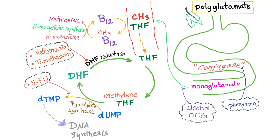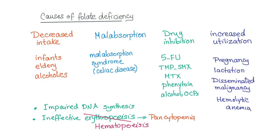Drugs that inhibit dihydrofolate reductase are methotrexate and trimethoprim. Please memorize this. Now for the causes of folate deficiency: decreased intake such as in infants, elderly, malnutrition, alcoholics, and goat milk. Malabsorption such as celiac disease. Drug inhibition by 5-fluorouracil, TMP-SMX, methotrexate, phenytoin, alcohol, and oral contraceptive pills. All of these drugs were in the previous slide.